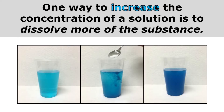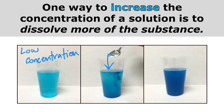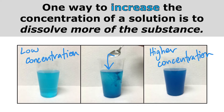One way to increase the concentration of a solution is to dissolve more of the substance. On the left, I've got a cup with a low concentration of the powdered blue drink mix. As I add more in, I increase the concentration, and on the far right you can see there's a higher concentration — it's easier to tell because the color is a much darker blue. That would have more flavor and be sweeter because I've put more powder in. So you can increase the concentration by just adding more of whatever you dissolved.